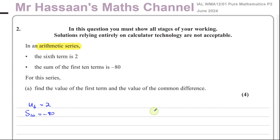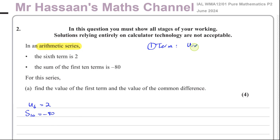Here we have to employ two of the formulas we learn for arithmetic series, which are in the formula book. One of them deals with finding a particular term: the nth term is equal to a plus (n minus 1) times d.